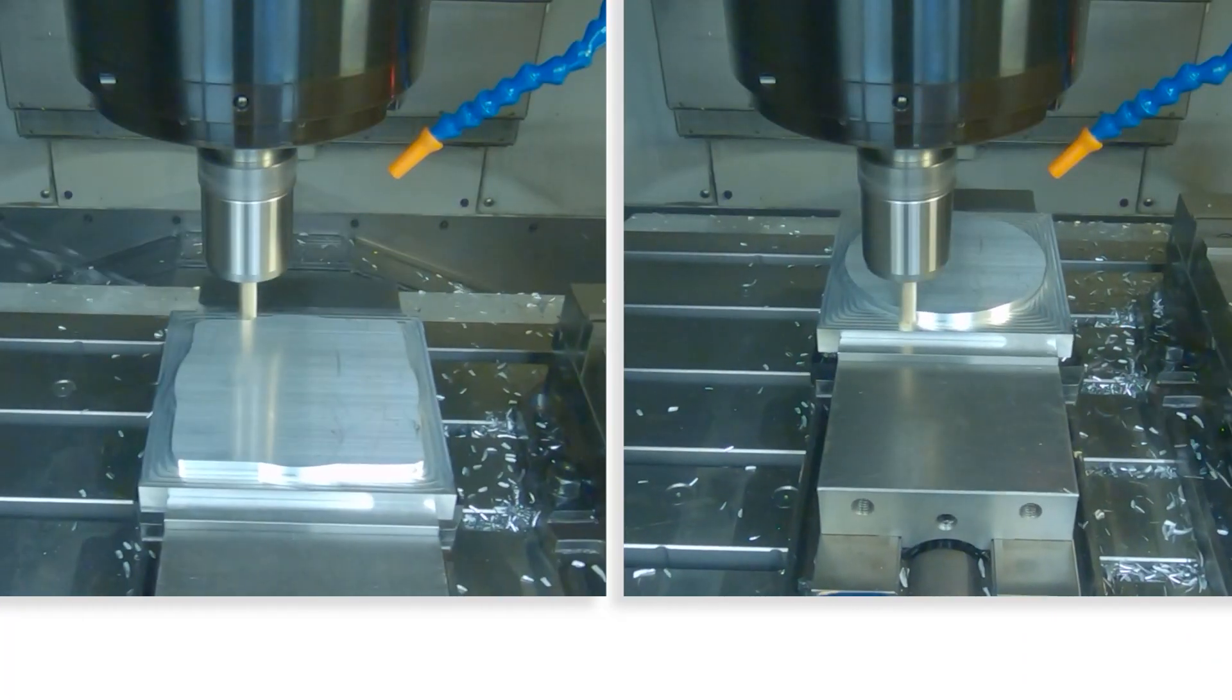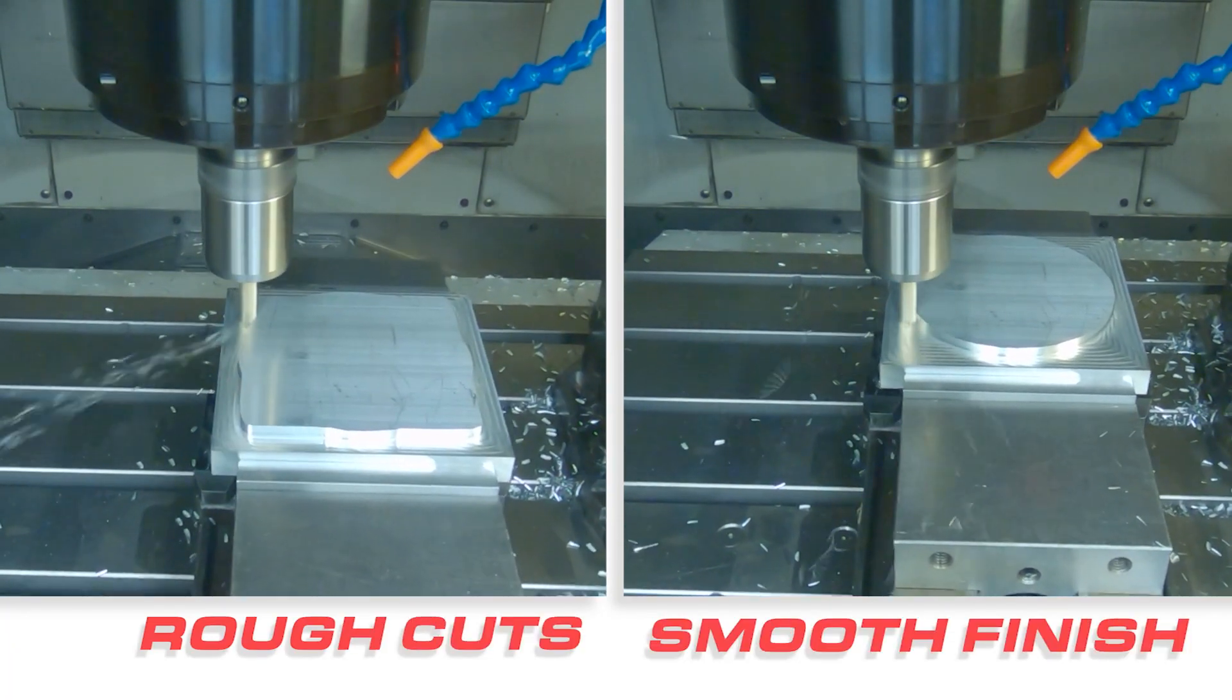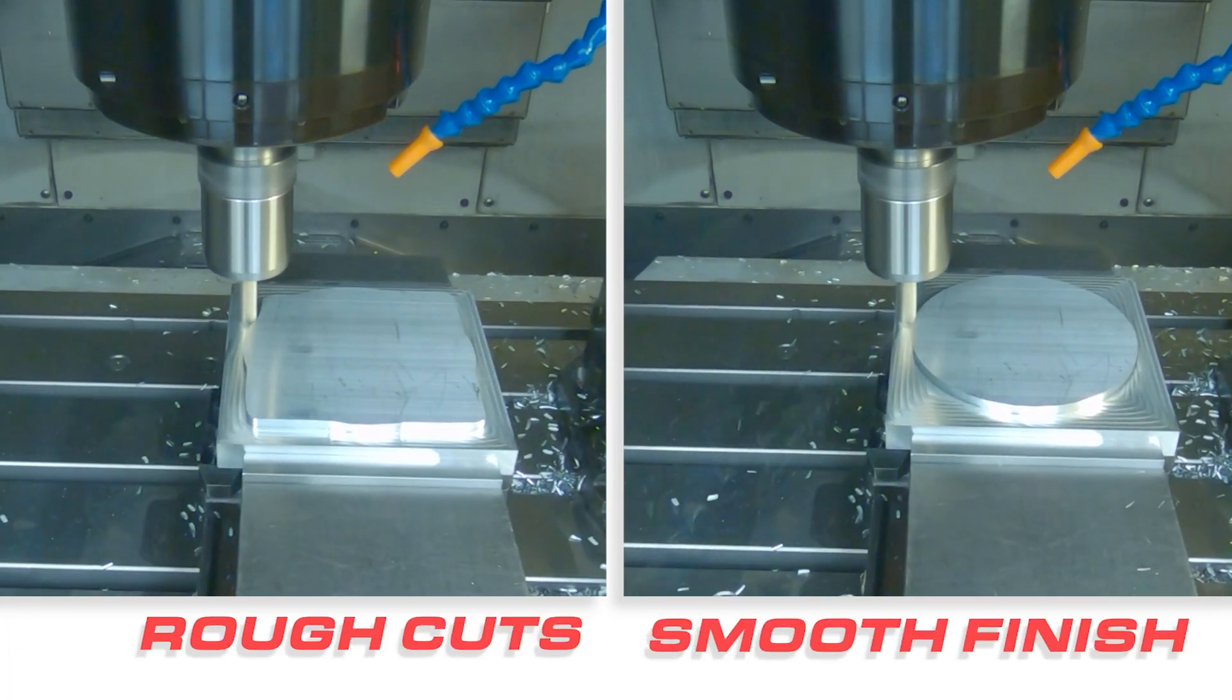In most situations, roughing removes the bulk of material, and then a final cut leaves a smooth finish.